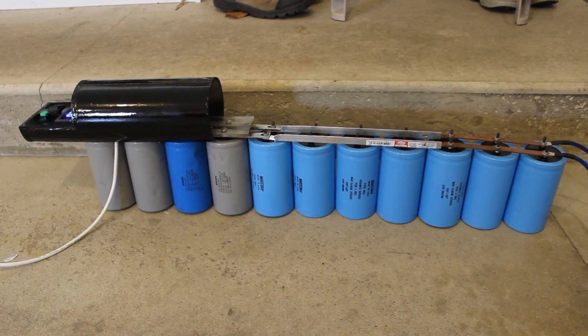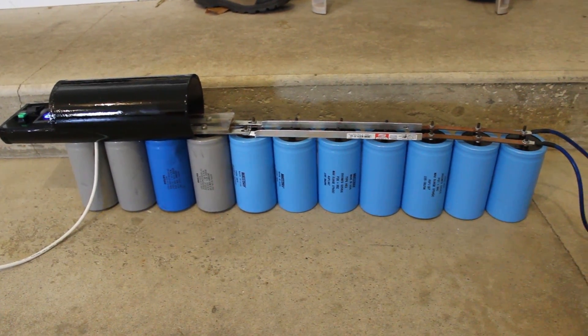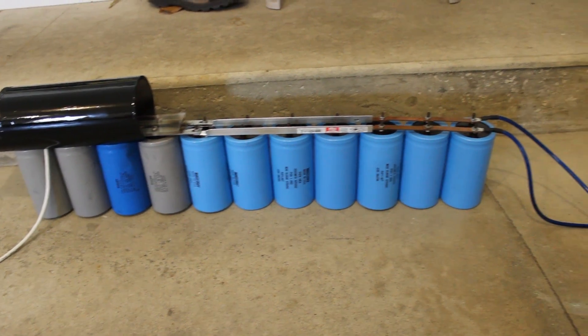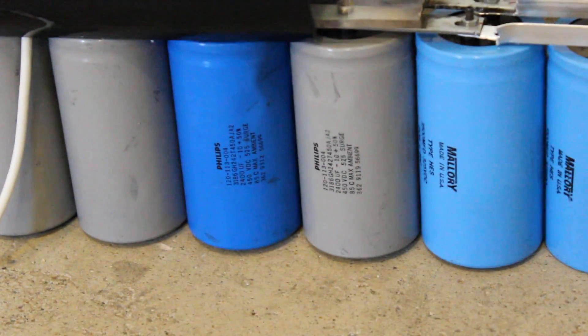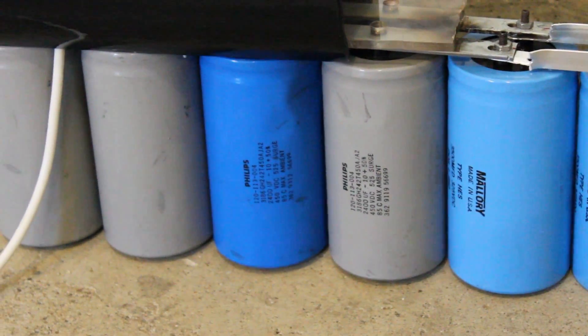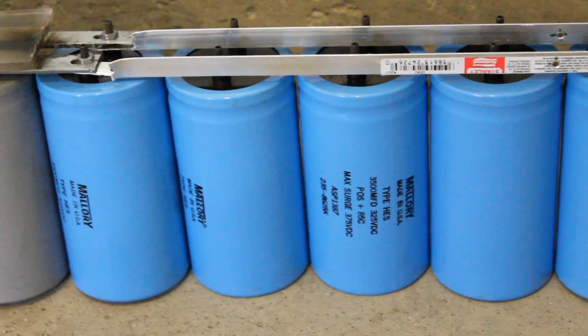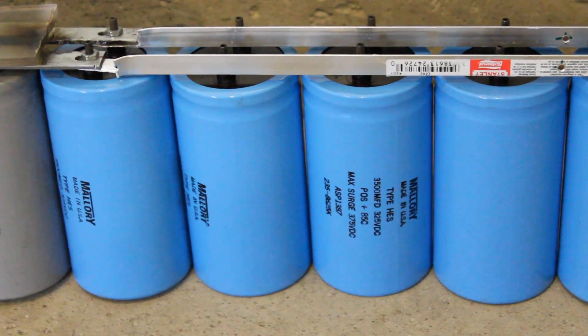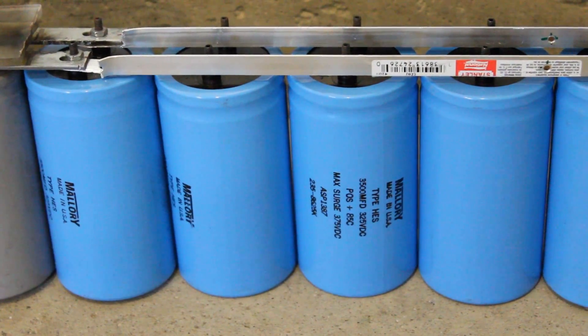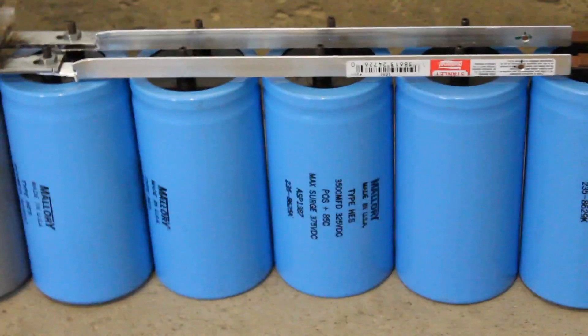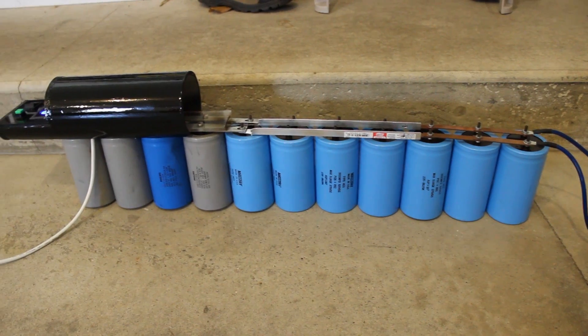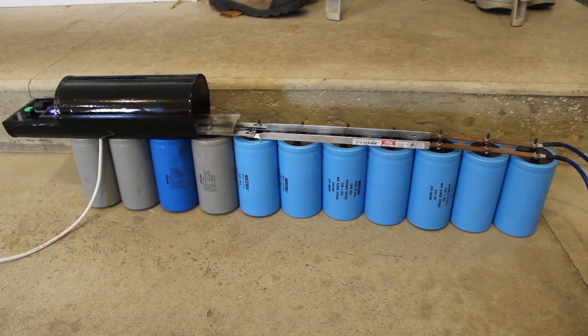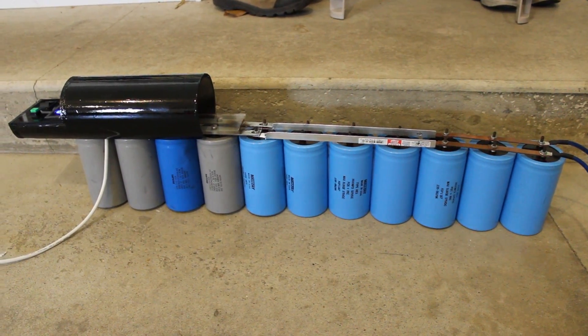So here today I have an upgrade to this bank. I added a few more new capacitors. The old ones are 450 volt capacitors; the new ones are 325. So that means my maximum is now 325 volts. But with the amount of capacitors I added, it should be roughly double the amount of joules. They give me about two times the amount of power from the last video.